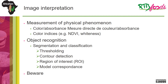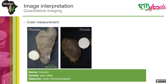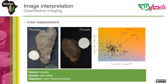After the acquisition of the image and their pre-processing, it remains to interpret them. The interpretation is based on the measurement of physical phenomena alone or in combination with object recognition. When it comes to characterizing the color of an object with heterogeneous or irregular surface, image analysis is particularly useful compared to conventional techniques such as chromameter. If the latter has the advantage of standardizing the process of color measurement, the measurement window remains small and it is mainly adapted to flat surfaces. Image analysis allows to characterize all surfaces at once without risk of sampling bias.